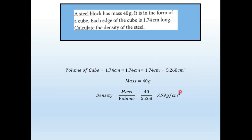A steel block has a mass of 14 grams and is in the form of a cube with each edge 1.74 centimeters. To calculate density, first calculate the volume: side × side × side = 5.268 cm³. With mass in grams and volume in cm³, density equals mass per unit volume: 7.59 grams per centimeter cube.